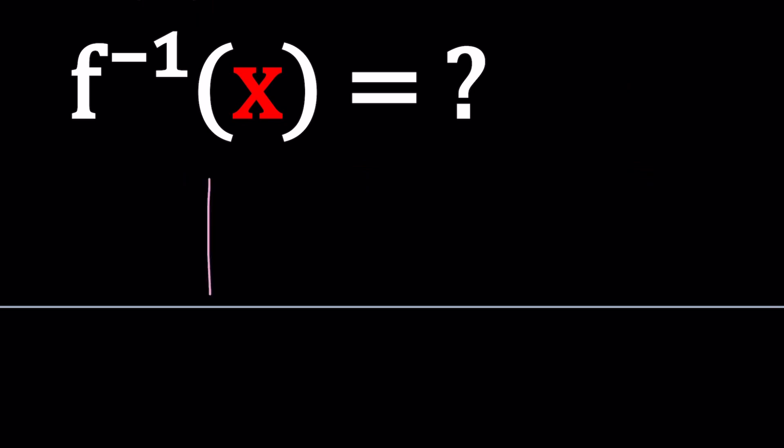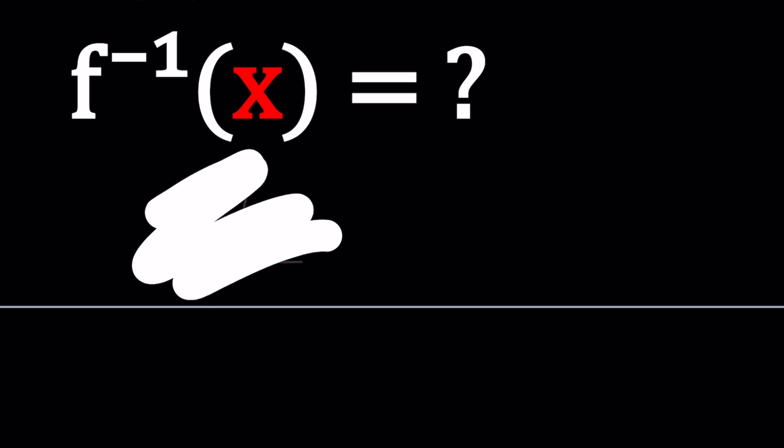Whenever you have a function that is not one-to-one, like y = x², it's not going to have a unique inverse. So, those are some of the things that I want you to think about, and now let's get to work.